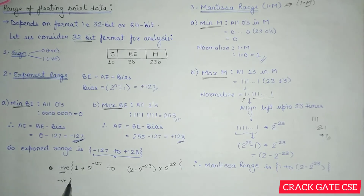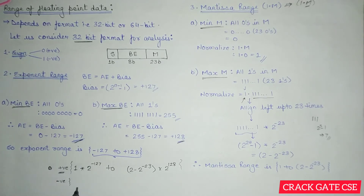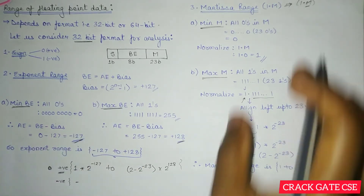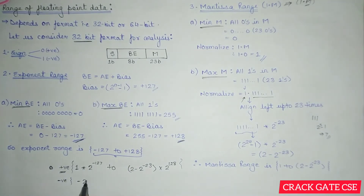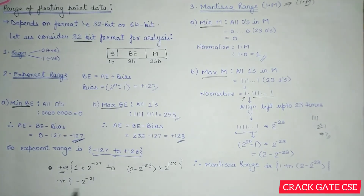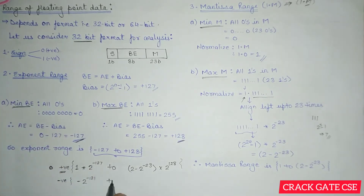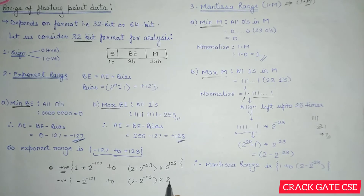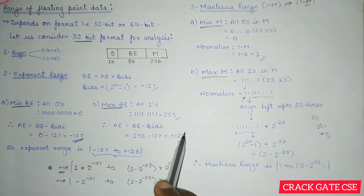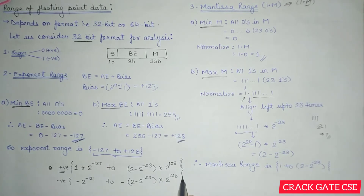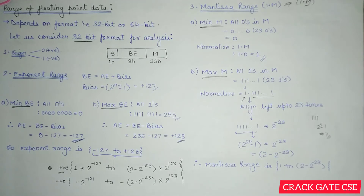Similarly, for the negative side (sign = 1), the minimum negative value is -1 × 2^(-127), and it varies to -(2 - 2^(-23)) × 2^128. So we have the full range for both positive and negative. Now we'll plot these values in a figure so we can clearly understand what's going on.